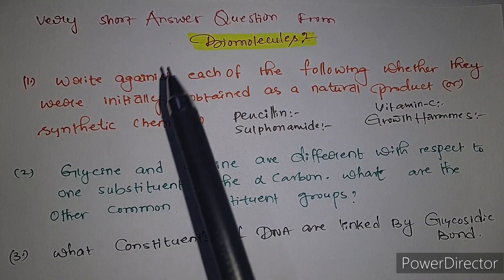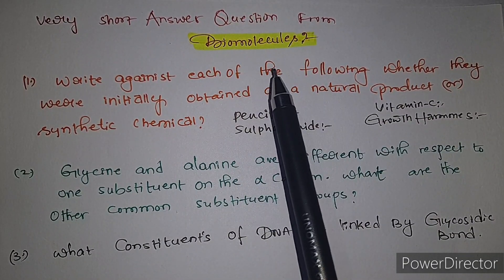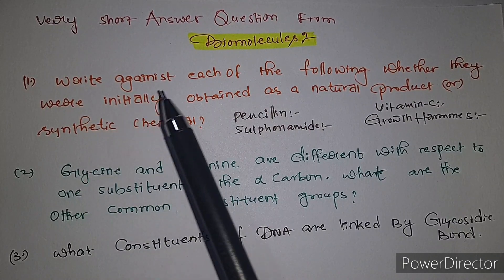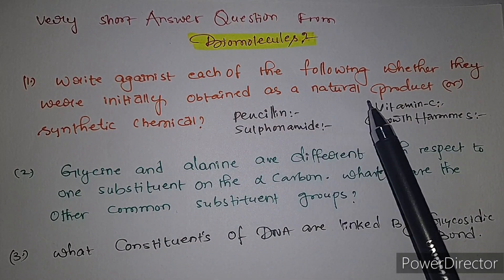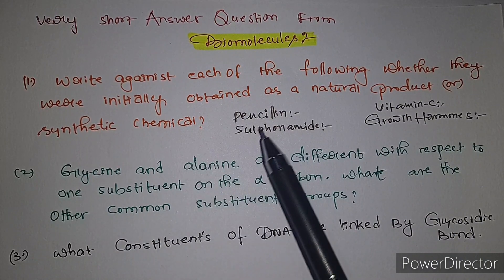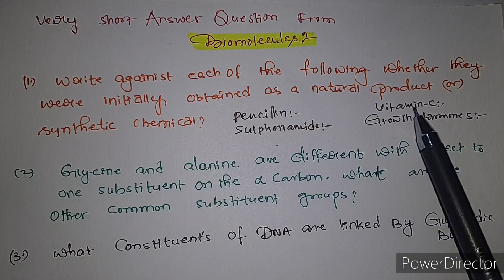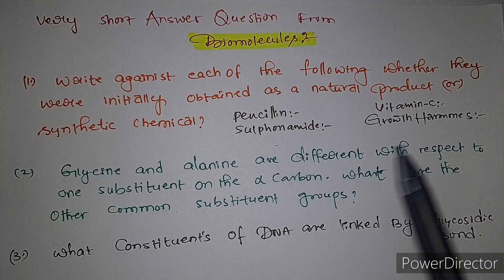First question: write against each of the following whether they were initially obtained as a natural or synthetic chemical - penicillin, sulfonamide, vitamin C, growth hormones. Second question: glycine and alanine are different with respect to one substituent on the alpha carbon.